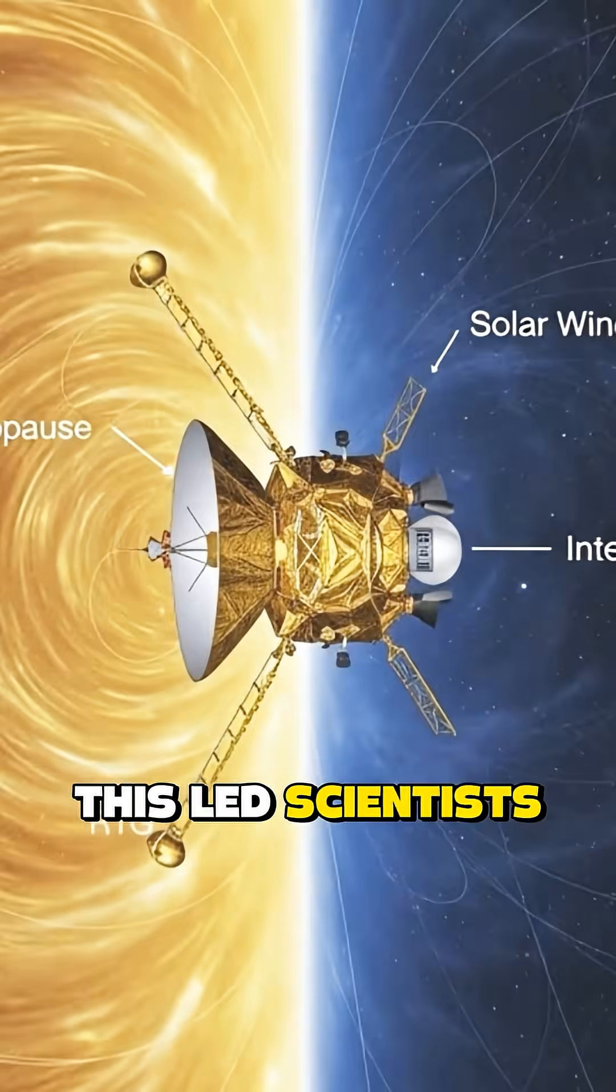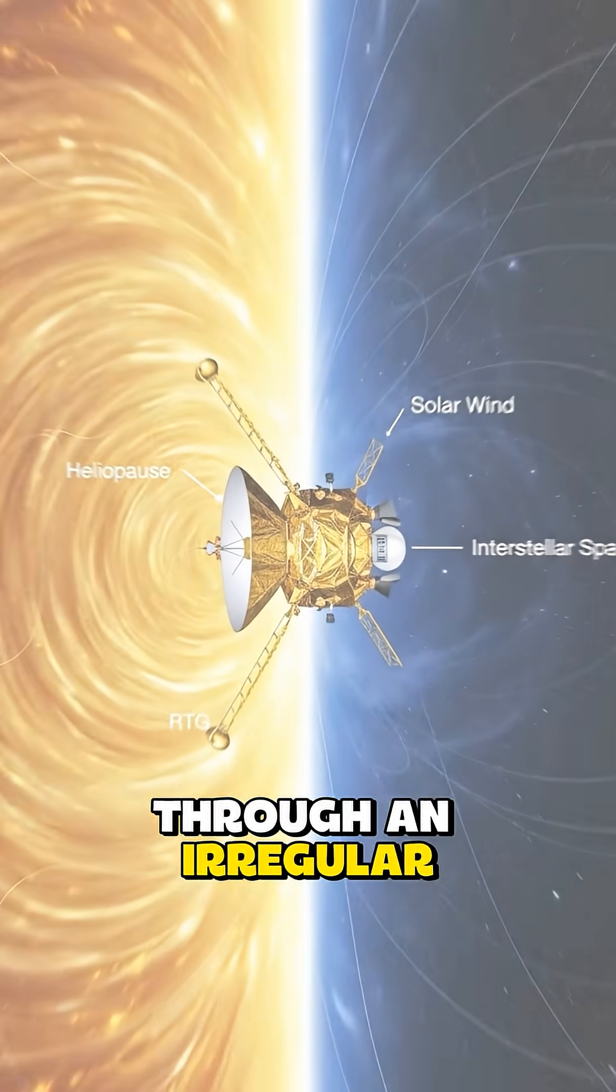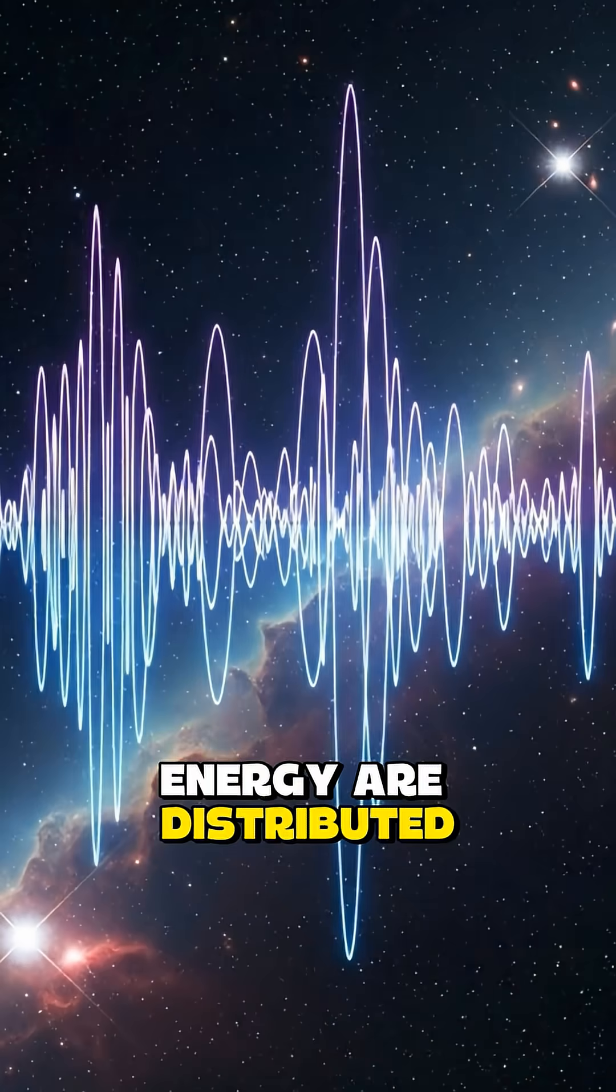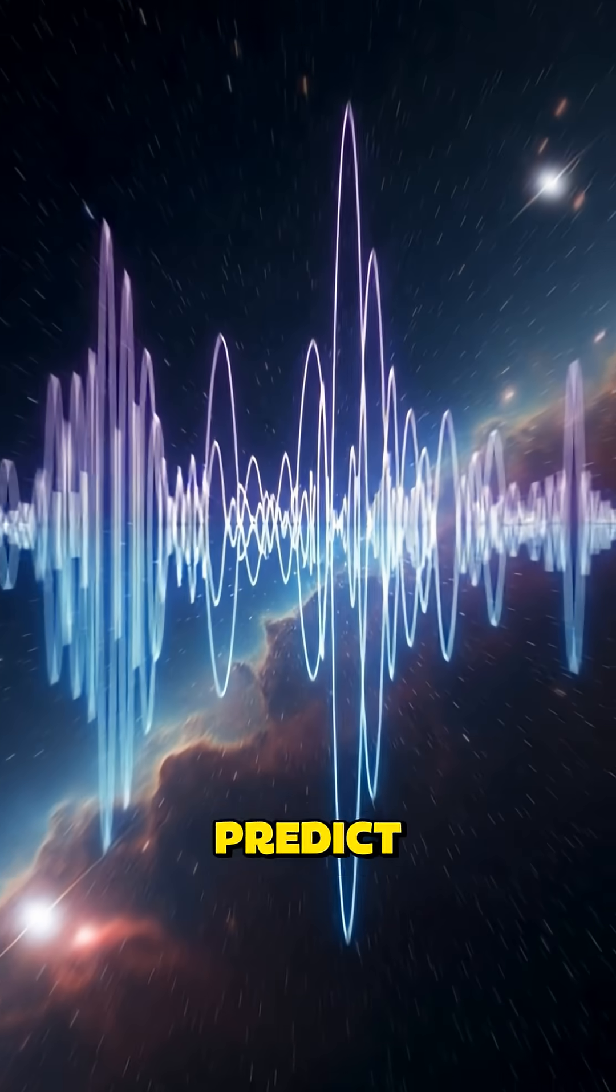This led scientists to suspect that Voyager is passing through an irregular patch of interstellar plasma, where density and energy are distributed far more chaotically than current models predict.